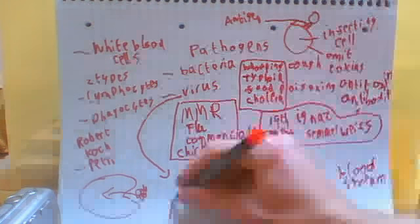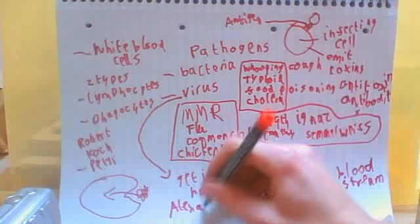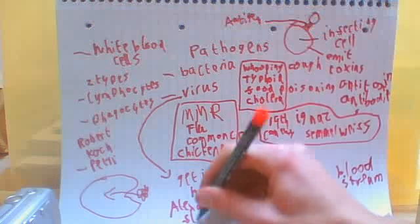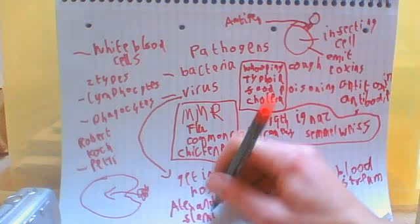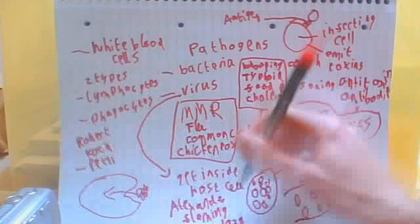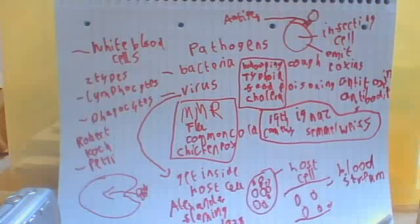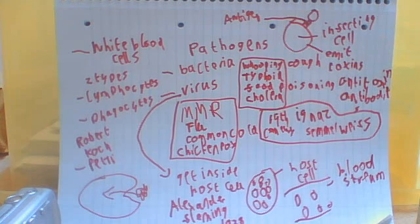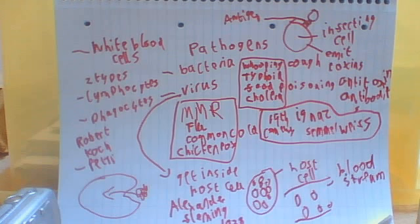And then you also have Alexander Fleming. Alexander Fleming worked around 1928, and what he did is he came up with the first antibiotic — penicillin. He actually accidentally discovered it, because he left open a window and some germ cells came in and enabled a particular type of mould to grow on his agar jelly. This mould was called penicillin mould and is used to produce penicillin, which is an antibiotic.